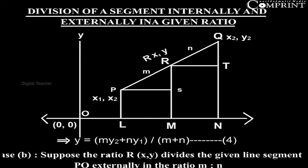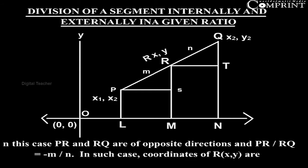Suppose the point R divides the given line segment PQ externally in the ratio m:n where m ≠ n. In this case, PR and RQ are of opposite direction and PR/RQ = -m/n.